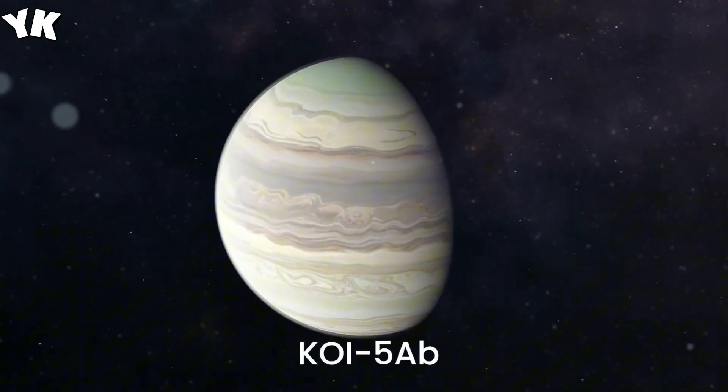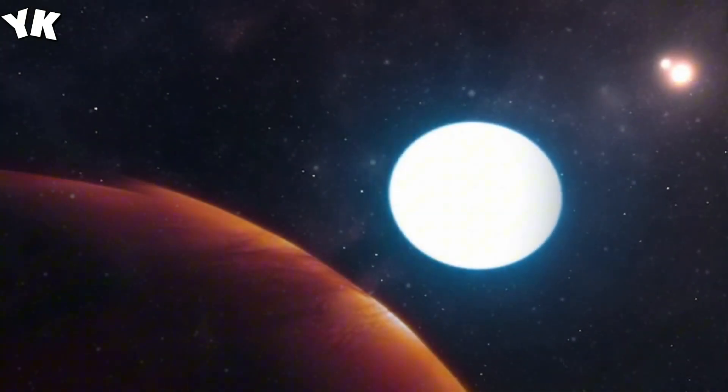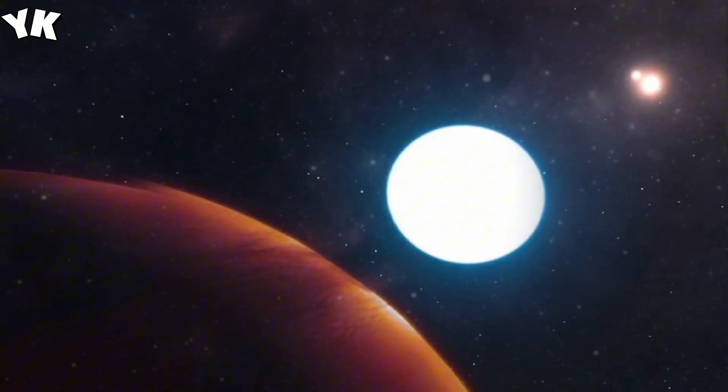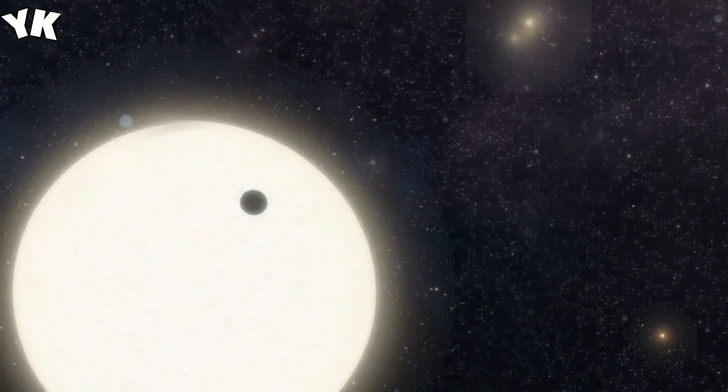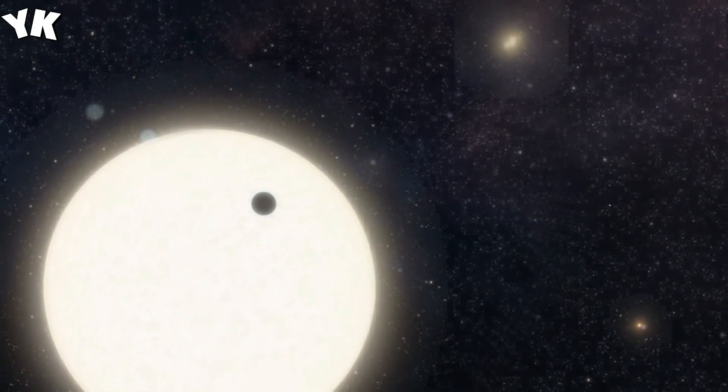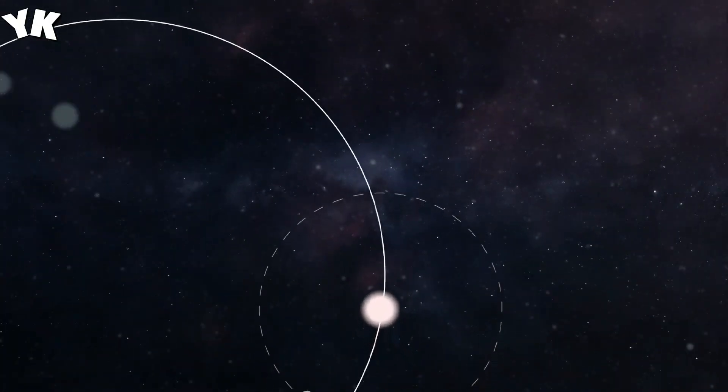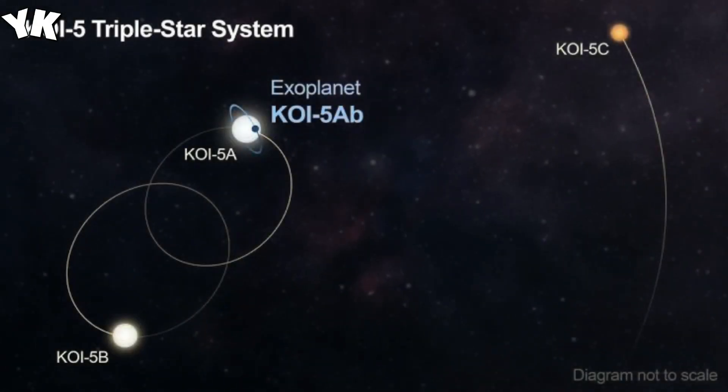KOI-5Ab, the triple-star enigma. Finally, we have KOI-5Ab, a planet in a triple-star system that once seemed like science fiction. Imagine a world where two suns grace the sky, with one of them shining brighter than our sun. It's a celestial wonder.